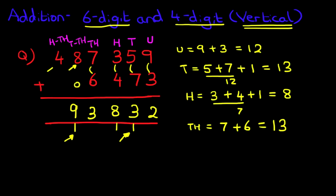And lastly, we've got the hundred thousands. Four plus zero becomes four. We can even put a comma to separate the thousands from the hundreds. And that is our answer: four hundred and ninety-three thousand, eight hundred and thirty-two.